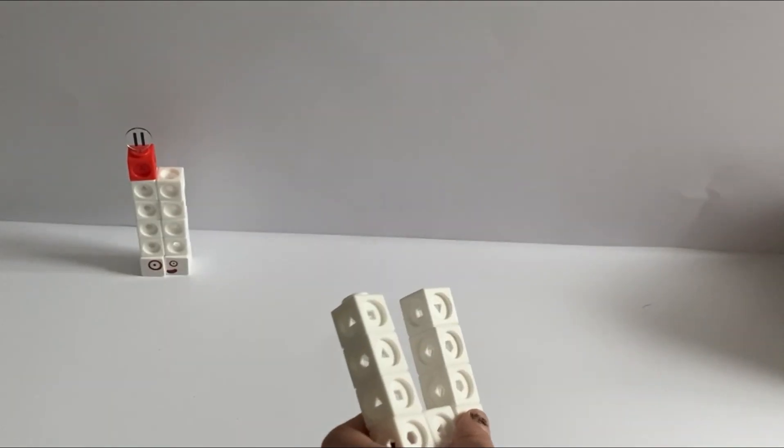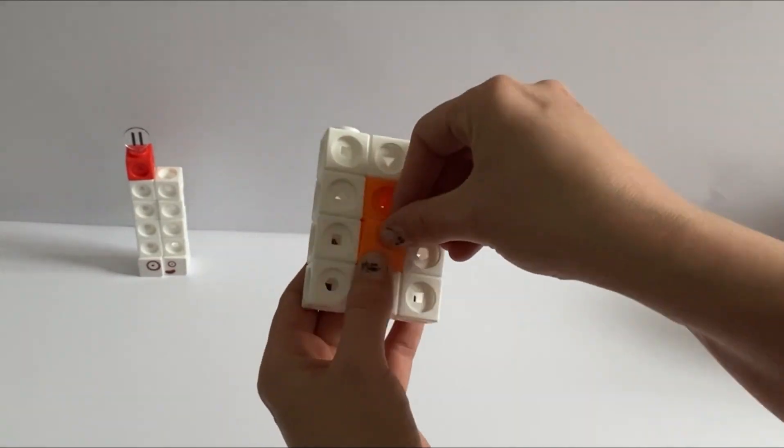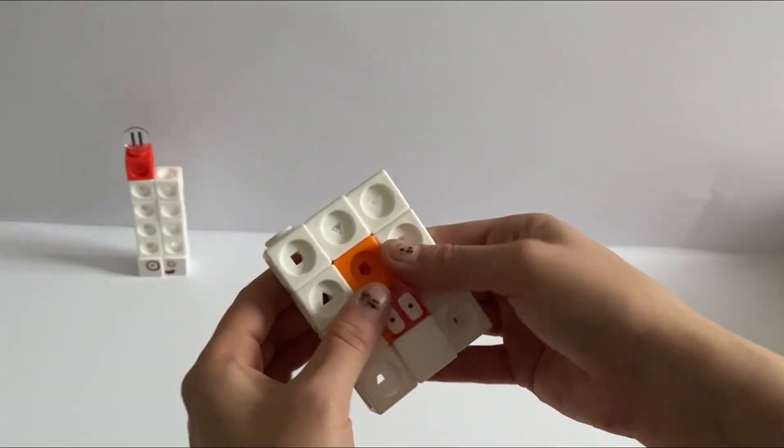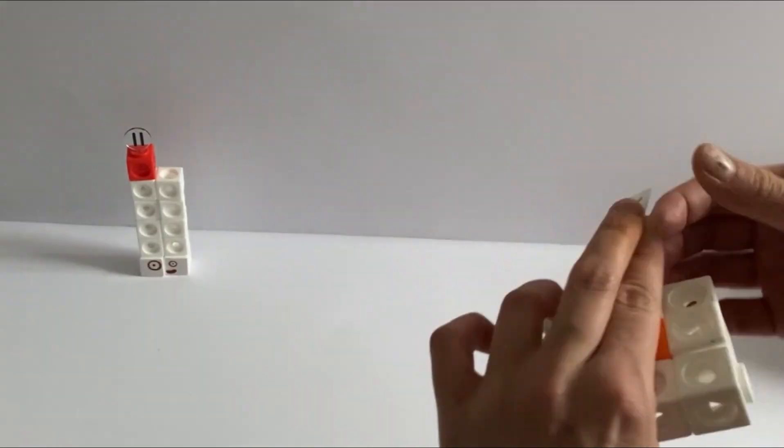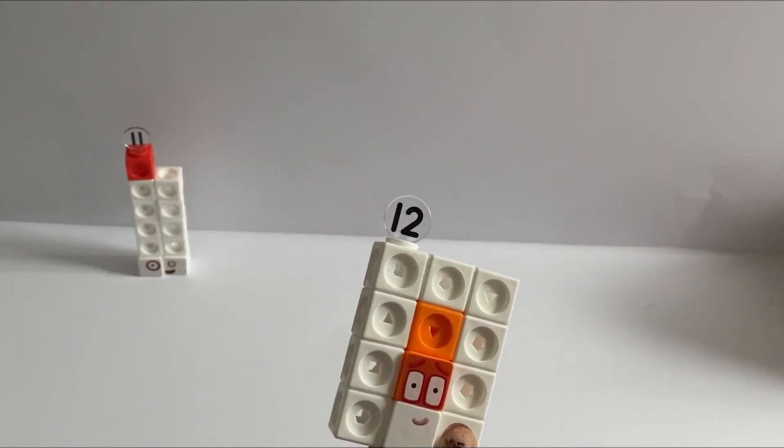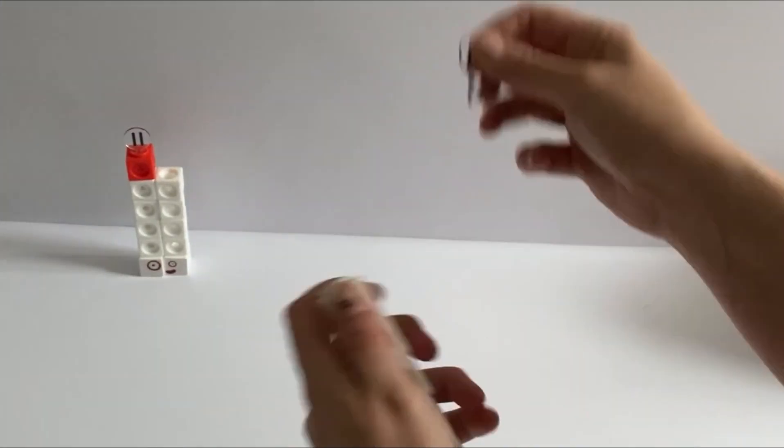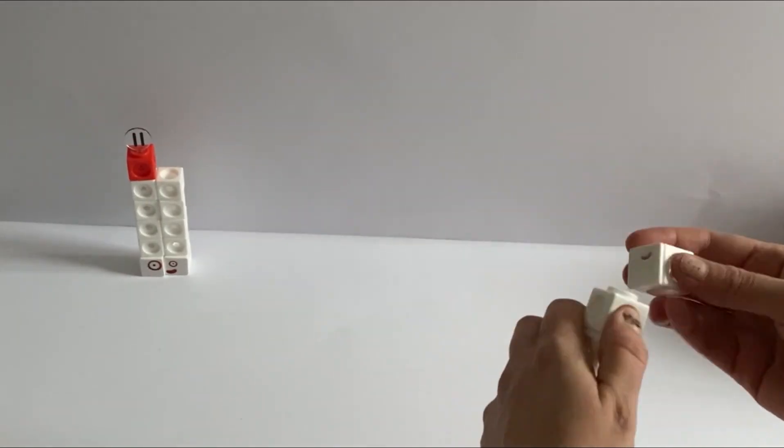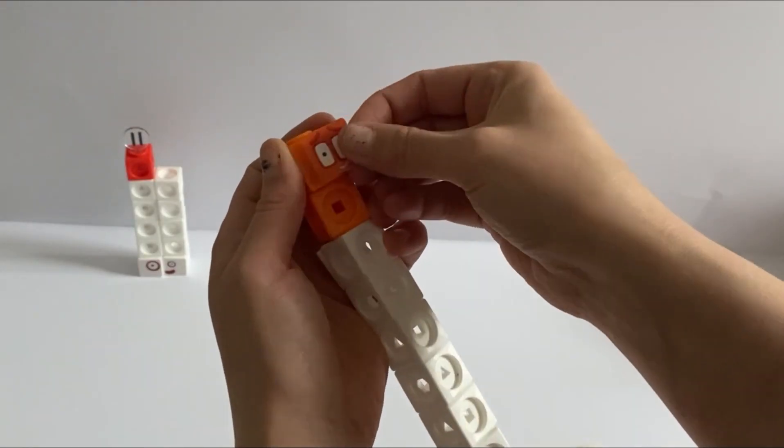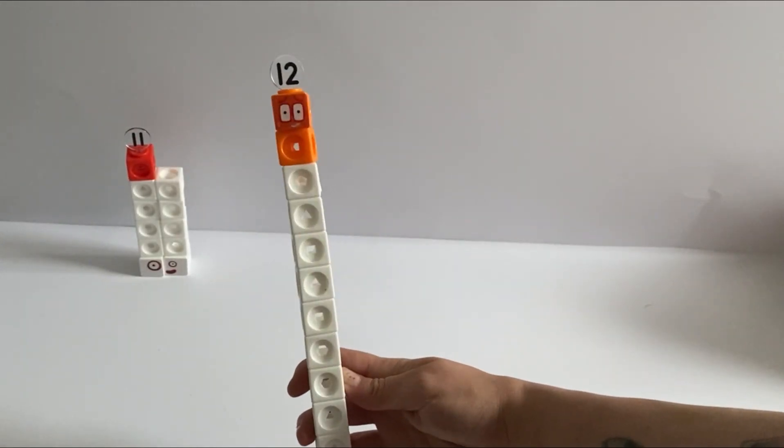Next we are going to build 12. 12 is 10 blocks of white and 2 orange. She is 4 lots of 3, and has 1 orange faceplate and 1 white faceplate with 2 stickers and the numberling 12. And in her tall form, she is obviously 10 white blocks tall with 2 orange blocks, 1 orange faceplate, a sticker, and the numberling 12.